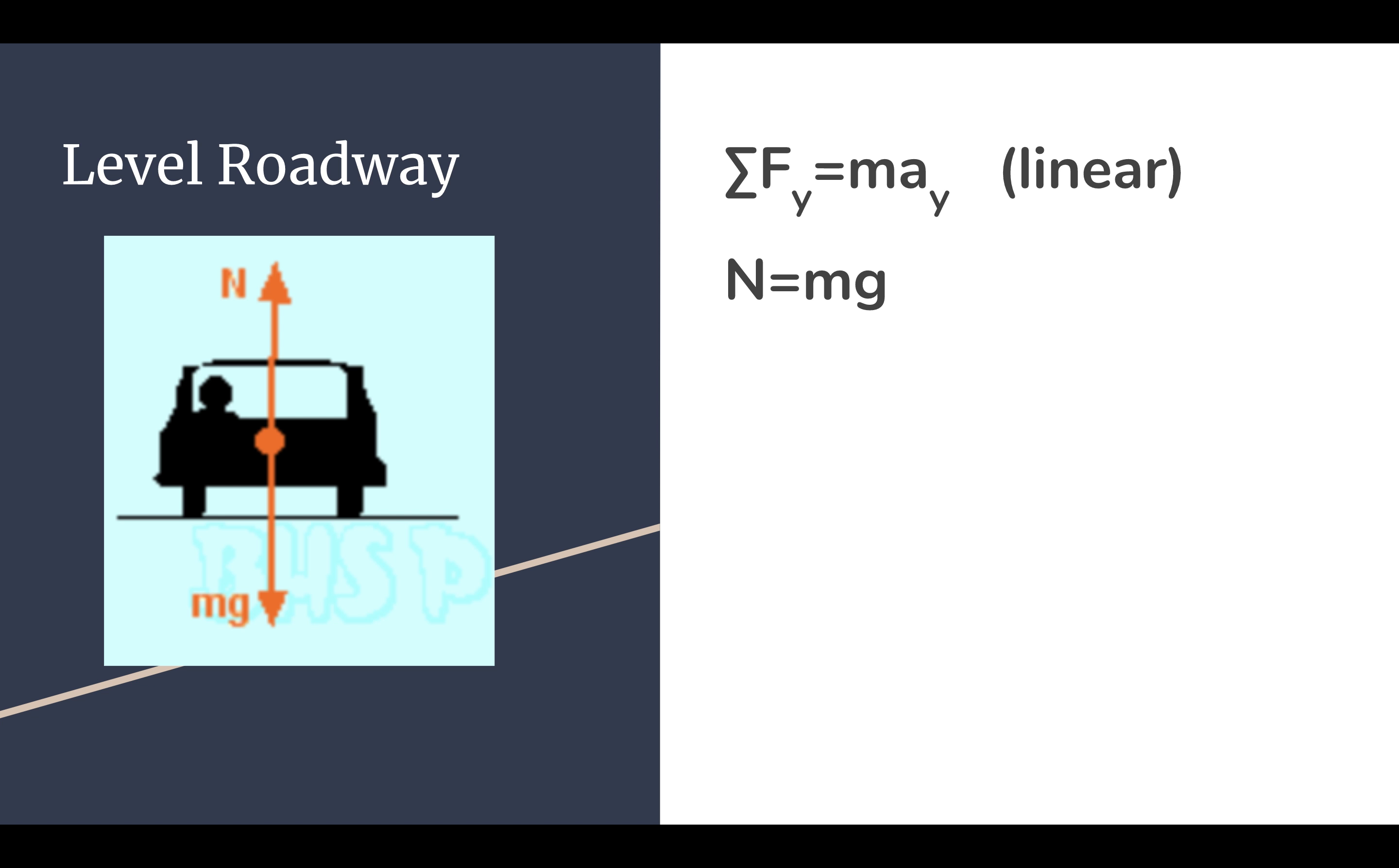So if we look at just someone driving along a level roadway in a straight line, then if we look at the dynamics of the forces acting on the car in the Y direction, again speeding up, slowing down, coming out of the page, but the normal force is going to be equal to the weight vector.